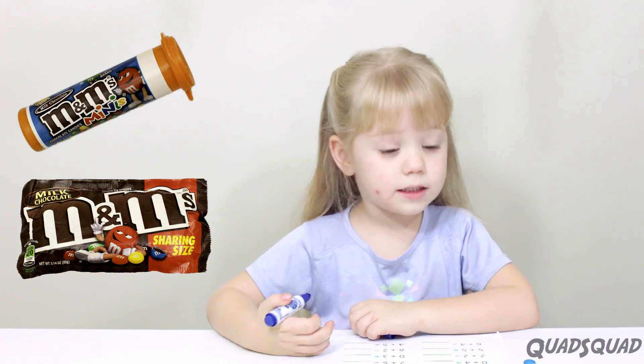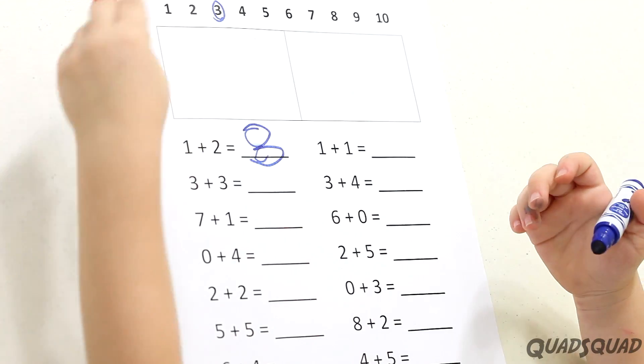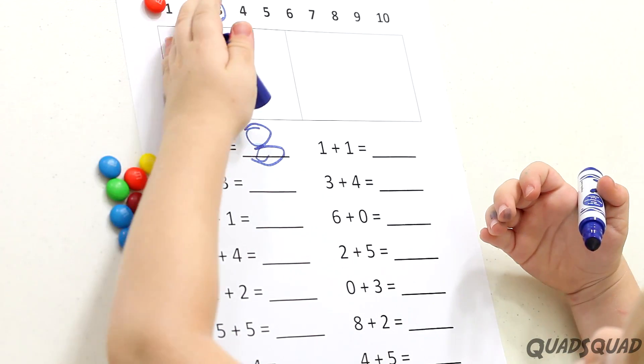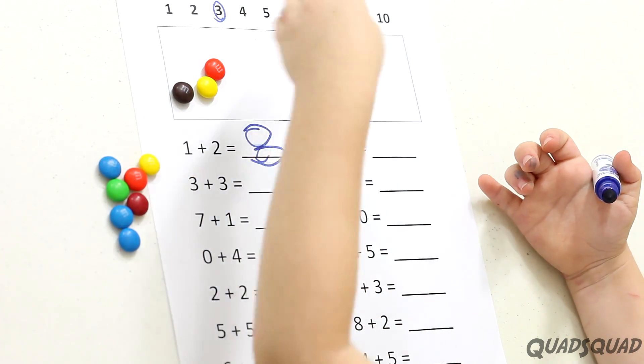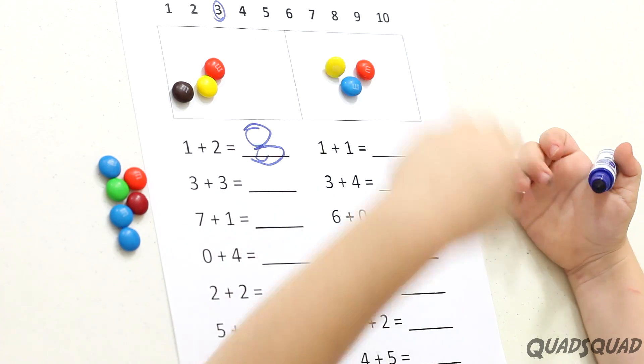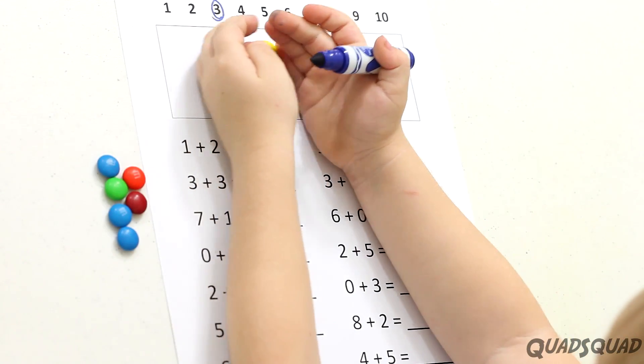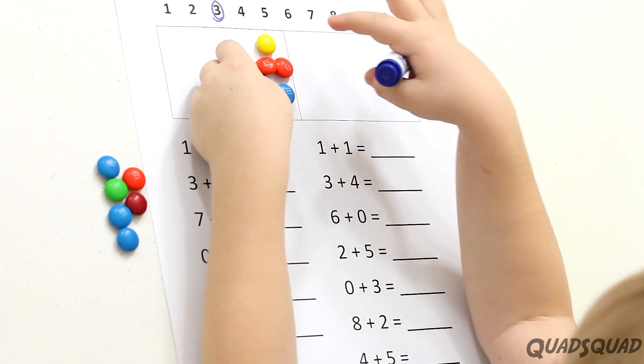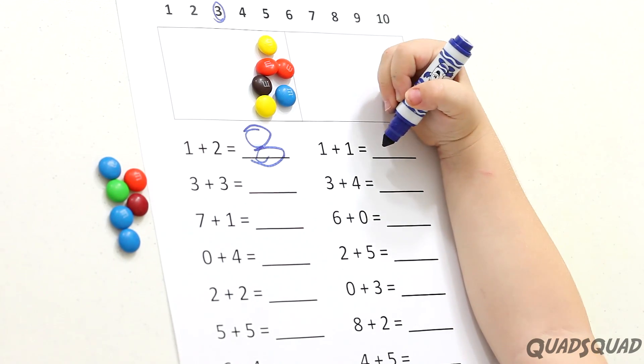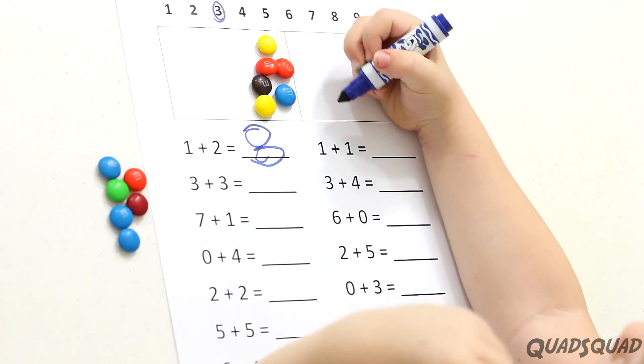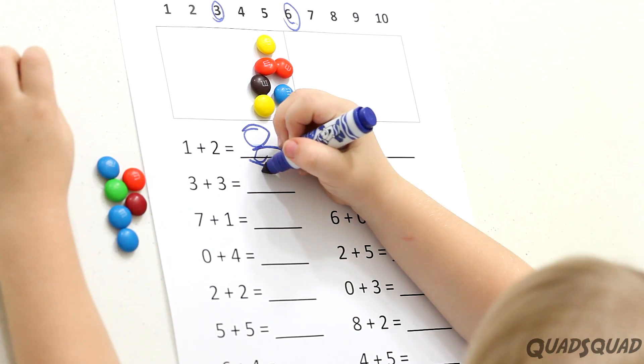The next question says, what's three plus three? So we've got to put three M&M's here and three in here. Now we've got to add them together. That equals one, two, three, four, five, six. So we've got to circle the six. So now I put a six here.